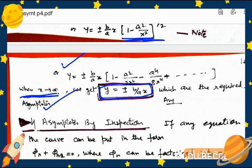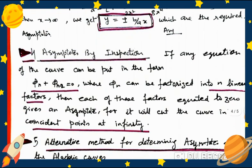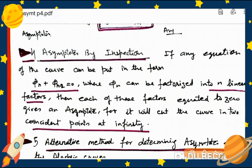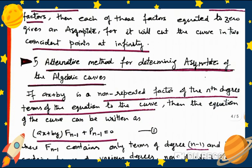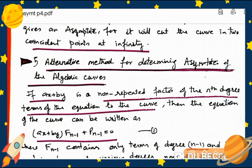Next, asymptotes by inspection: if any equation of the curve can be put in the form φₙ + φₙ₋₂, where φₙ can be factorized into n linear factors, then each of these factors equated to zero gives an asymptote, for it will cut the curve at a consistent point at infinity.